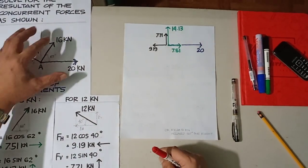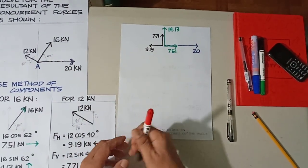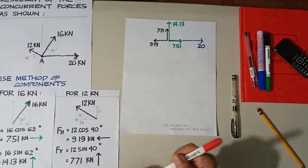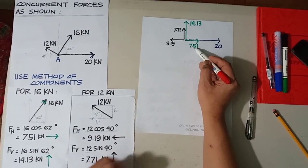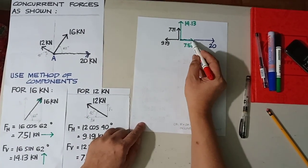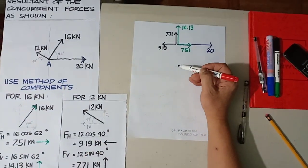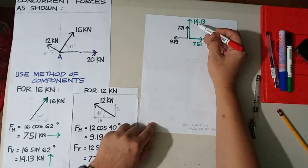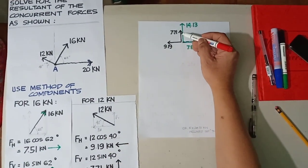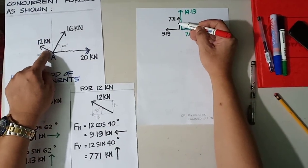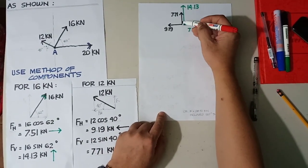Putting all the figures together: the horizontal component of the 20 kN force is 20 (acting right); the horizontal component of the 16 kN force is 7.51 (acting right); the vertical component of 16 kN is 14.13 (acting up); the vertical component of 12 kN is 7.71 (acting up); and the horizontal component of 12 kN is 9.19 (acting left).